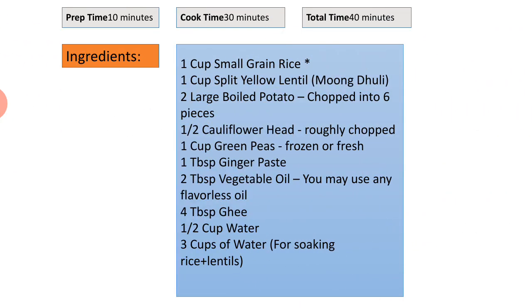Preparation time is 10 minutes, cook time is 30 minutes, total time is 40 minutes. Ingredients: one cup small grain rice, one cup split yellow lentil (mug dal), and two large boiled potatoes chopped into six pieces.